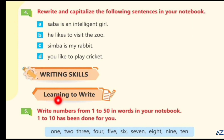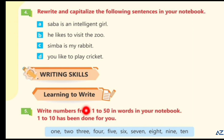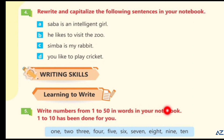Learning to write. Write numbers from 1 to 50 in words in your notebook. 1 to 10 has been done for you: ONE-1, TWO-2, THREE-3, FOUR-4, FIVE-5, SIX-6, SEVEN-7, EIGHT-8, NINE-9, TEN-10.